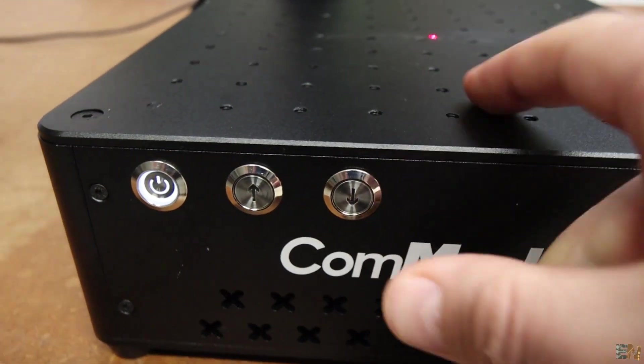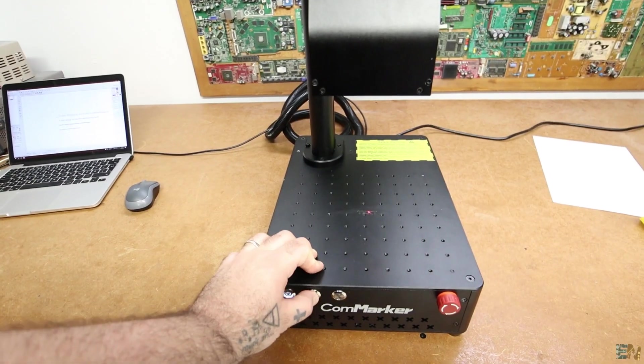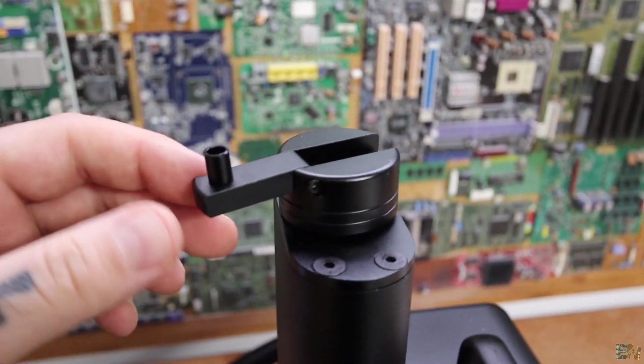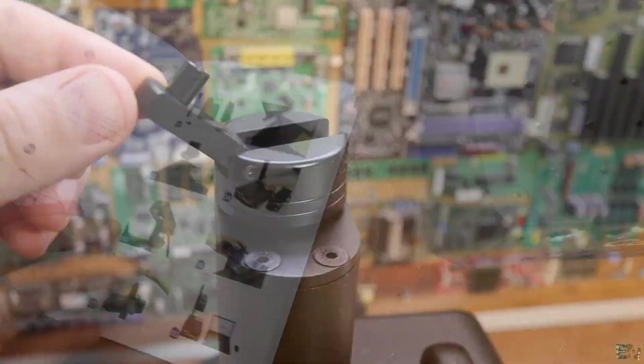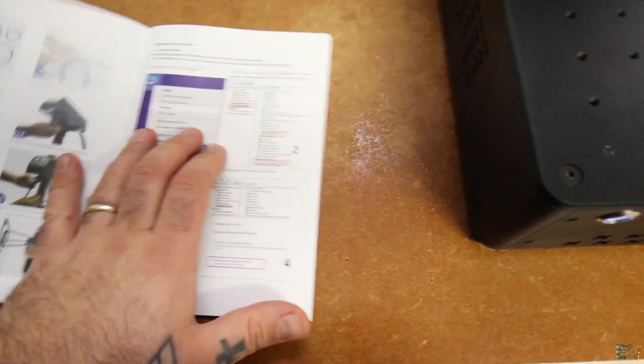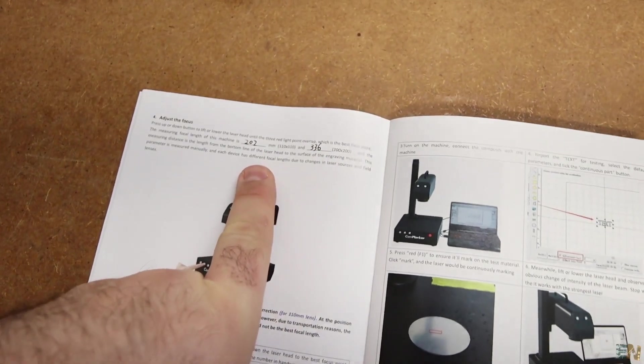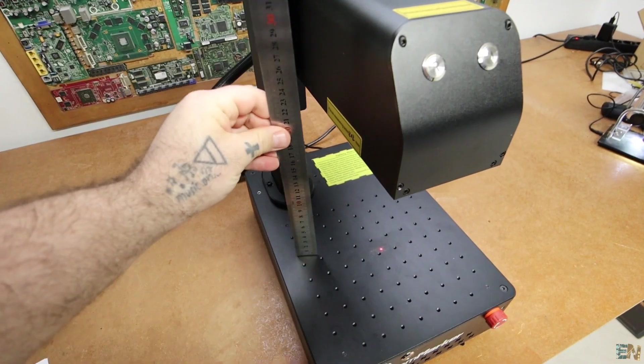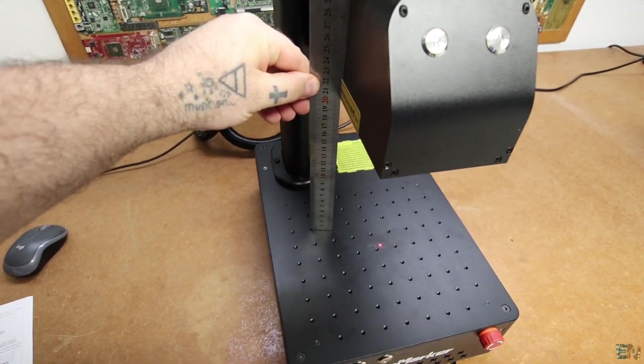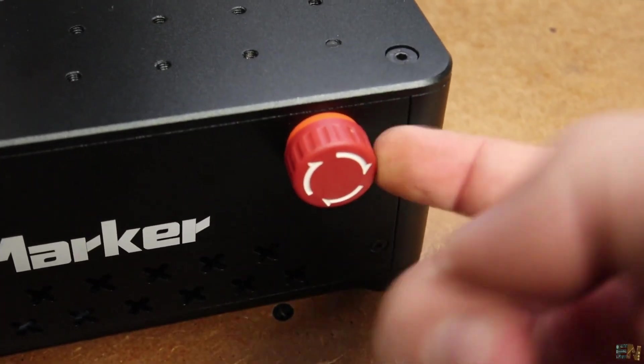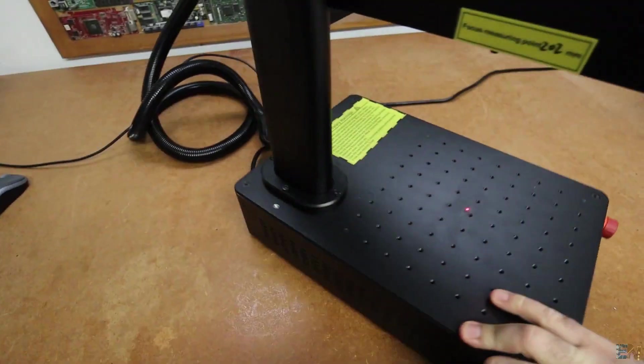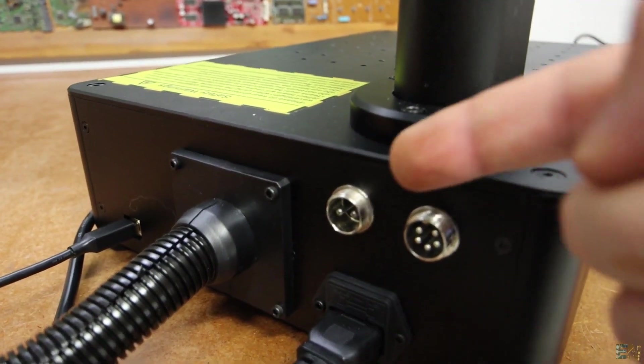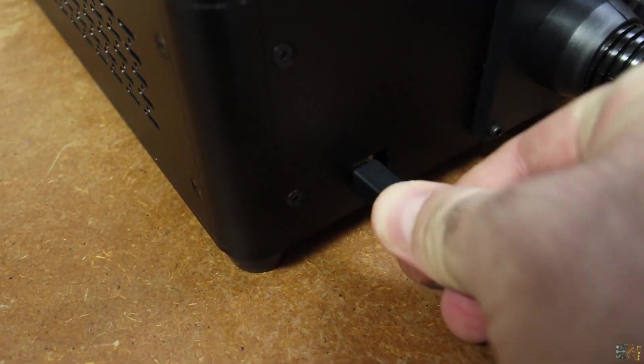The controller also has these 2 push buttons for leveling, to go up or down. But you could also do that manually by using this lever here. To adjust the focus, just check the manual. Depending on the lens that you use, you have these 2 values. Adjust the height till you reach those values and the machine should be in focus. You also have the emergency button just in case. On the back we have the output for the rotary controller and also an input for the foot pedal. Obviously we also have the USB input.